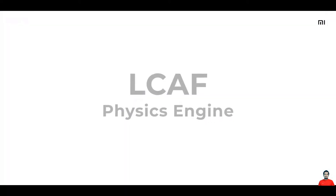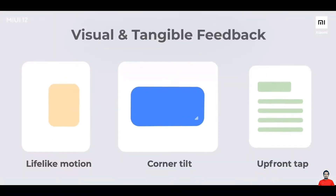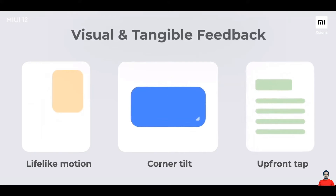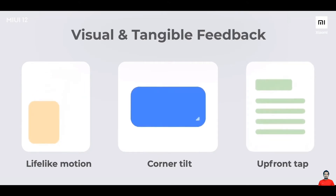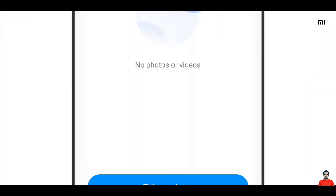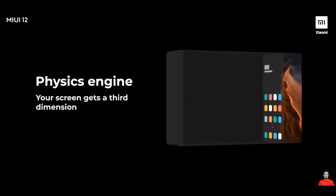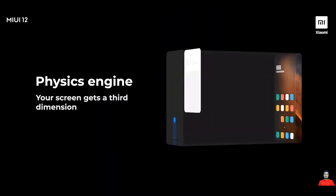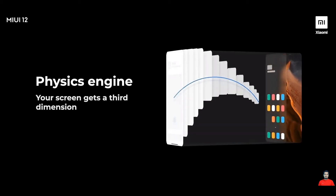The LCAF physics engine has the ability to turn UI elements into real-life objects. Every time you touch the screen or perform gestures, you get a nice visual, tangible feedback and every movement actually seems real. With the physics engine, icons mimic real-life objects. If you look carefully, the movement is not two-dimensional but three-dimensional — especially when you press an icon, it goes down in the z-axis, giving it a real three-dimensional feel.